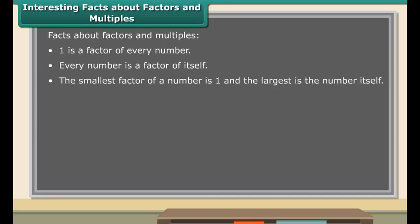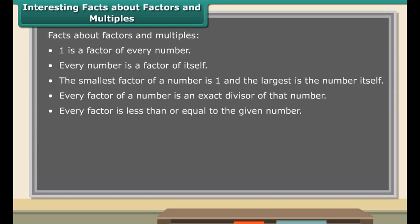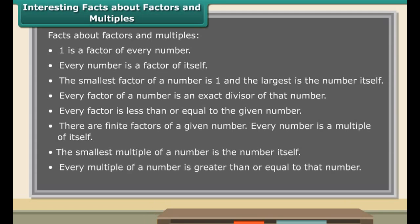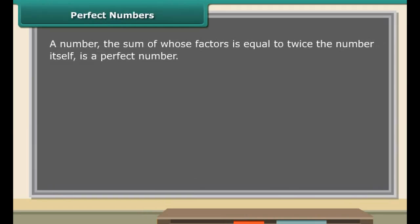Here are some interesting facts about factors and multiples: 1 is a factor of every number; every number is a factor of itself. The smallest factor of a number is 1, and the largest is the number itself. Every factor of a number is an exact divisor of that number. Every factor is less than or equal to the given number. There are finite factors of a given number. Every number is a multiple of itself. The smallest multiple of a number is the number itself. Every multiple of a number is greater than or equal to that number, and there are infinite multiples of a given number.